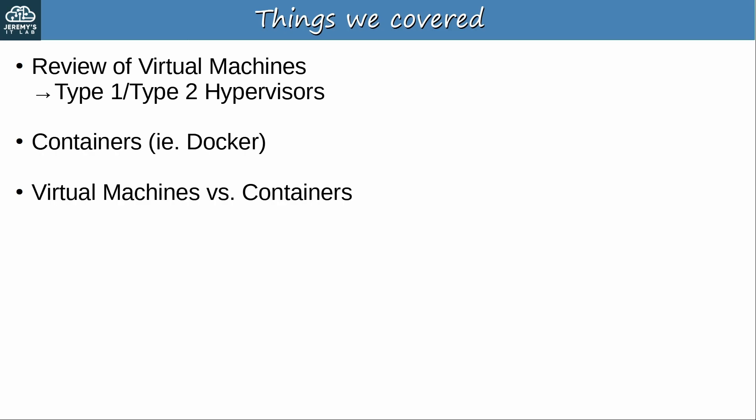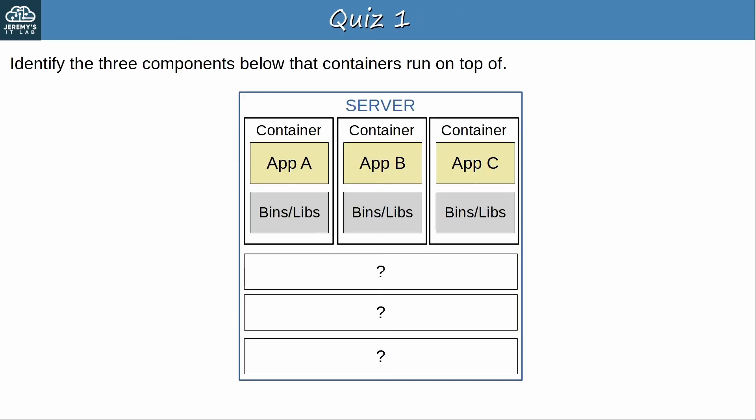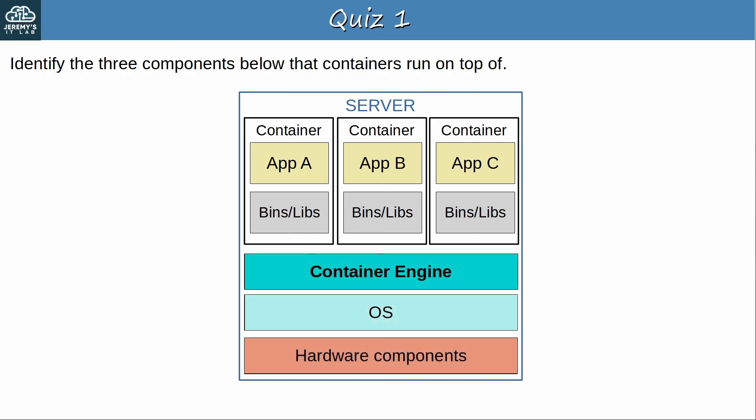Here's question 1: Identify the three components that containers run on top of. The three components are the hardware, the OS which runs on top of the hardware, and the container engine which runs on top of the OS. Then the containers all run on top of the container engine.